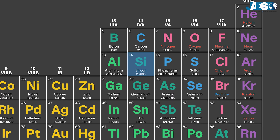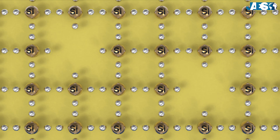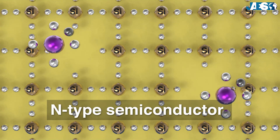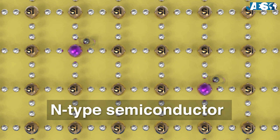On the other hand, if elements from the 15th group, like phosphorus or arsenic, are added — which have five-valence electrons — an N-type semiconductor is created, and there will be a free electron in the crystal lattice.